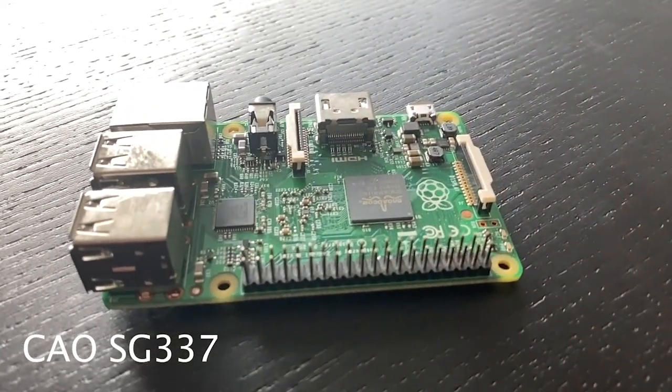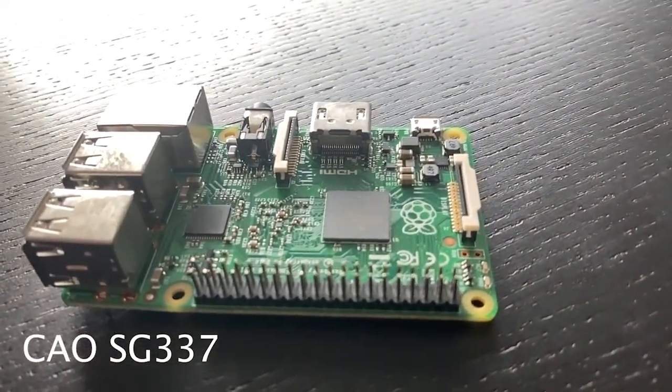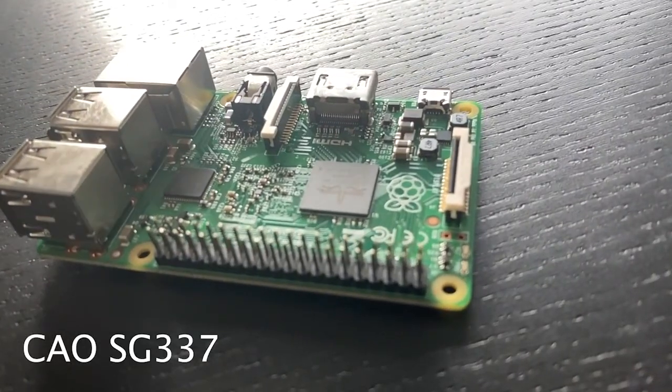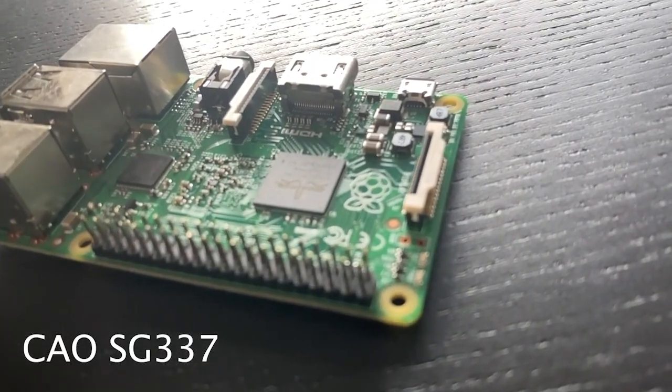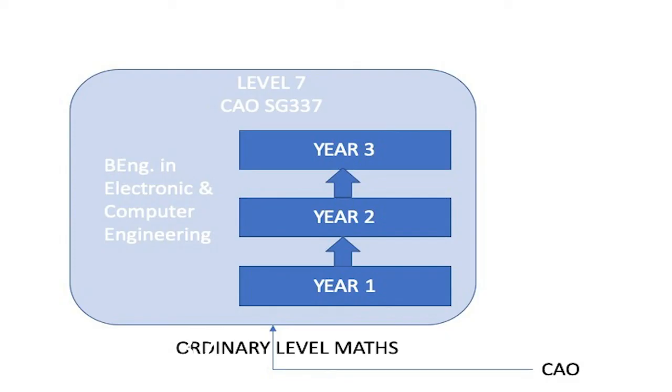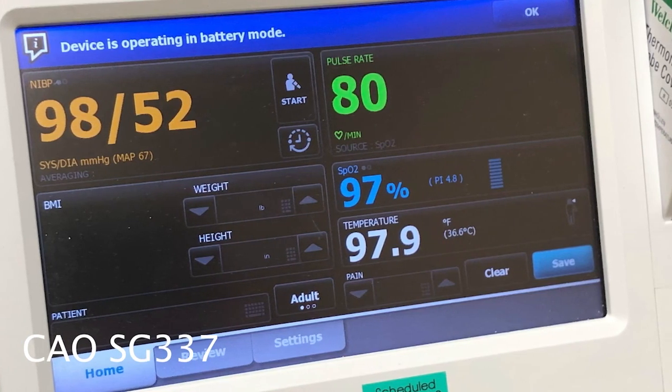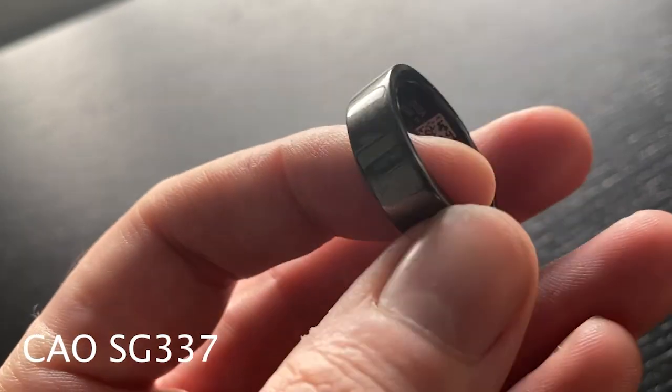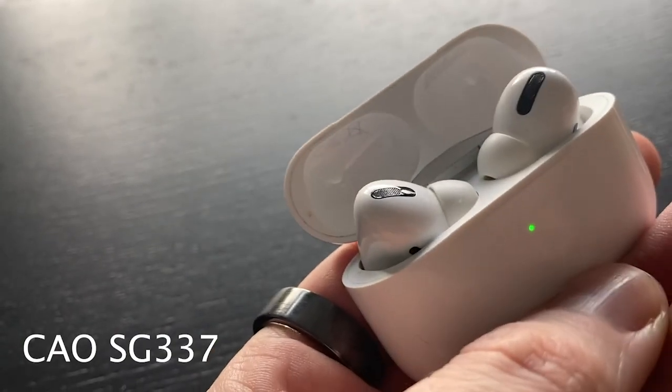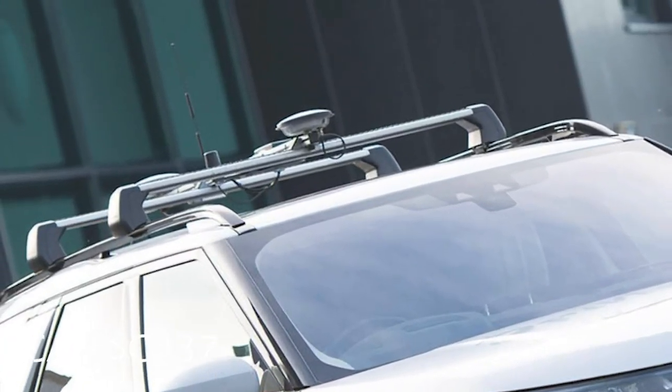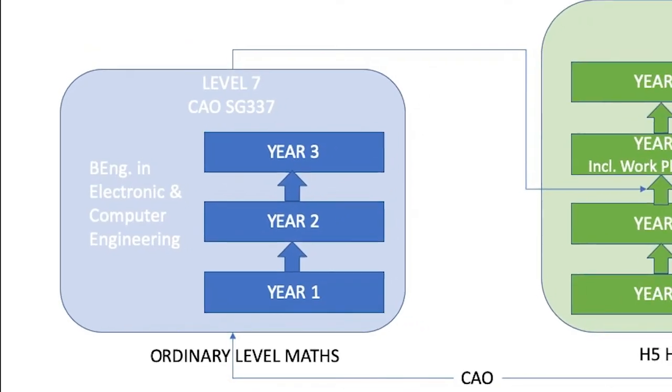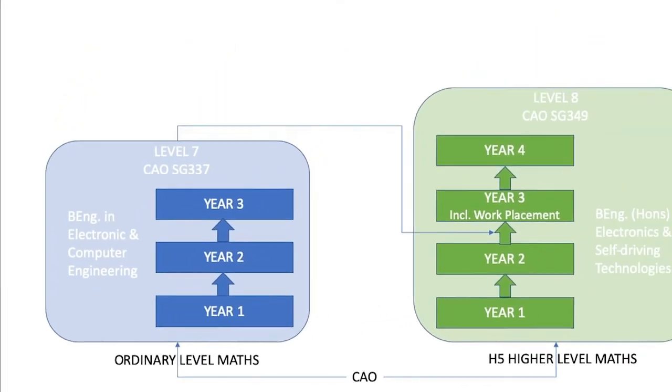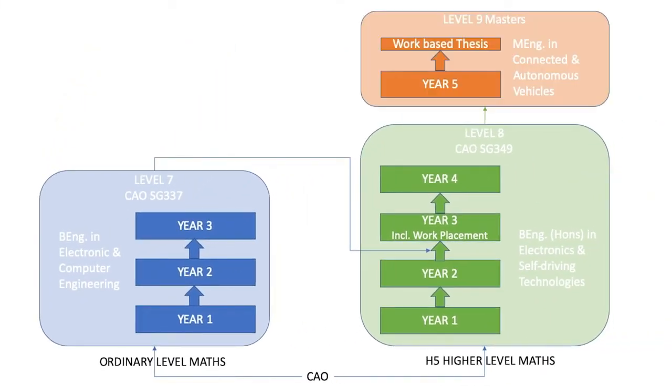If you are interested in technology or engineering but are not doing higher level maths, why not consider our Level 7 in Electronic and Computer Engineering. This is a three-year program that looks at the design and development of embedded electronic systems. These are the medical devices that keep us healthy, the consumer devices that keep us entertained, or the control systems that keep us safe on the road. You can then progress onto the Level 8 in Electronics and Self-Driving Technologies, and from there to the masters. Check out the link below for more information.